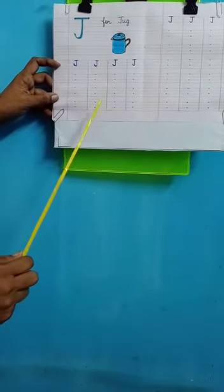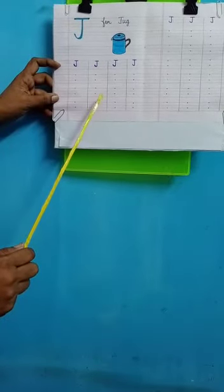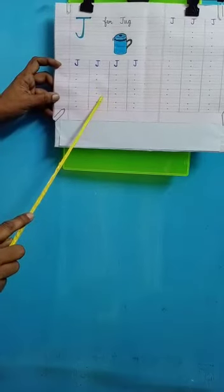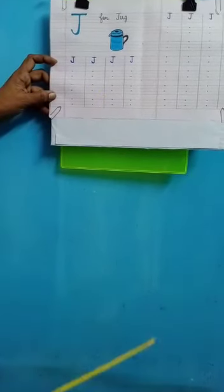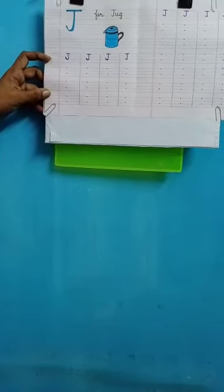So that is your homework. This is for homework. I and J in the exercise book is for homework. Make sure you complete it with good neat writing. God bless you. Have a good week. Thank you.